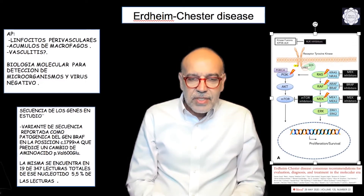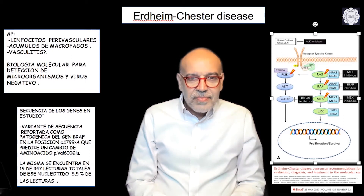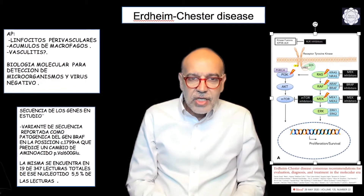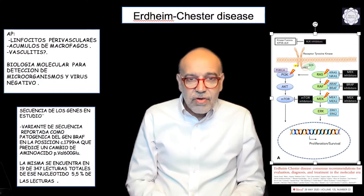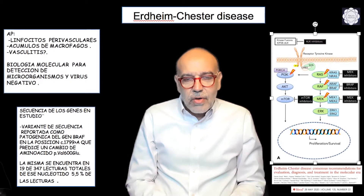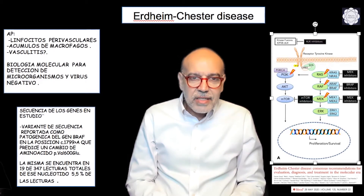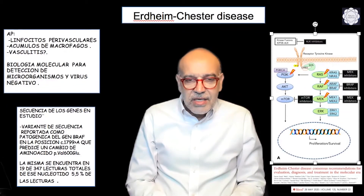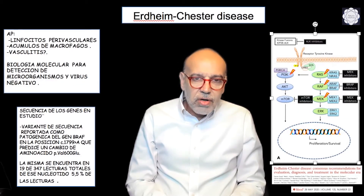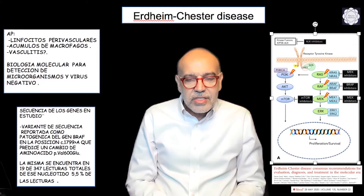The procedure was a stereotaxic biopsy of the sella bone, and the microscope revealed perivascular infiltration of lymphocytes and a lot of clusters of foamy histiocytes. The first diagnosis was vasculitis, but because everything was negative — the molecular biology for microorganisms and viruses was negative — they decided to go further.